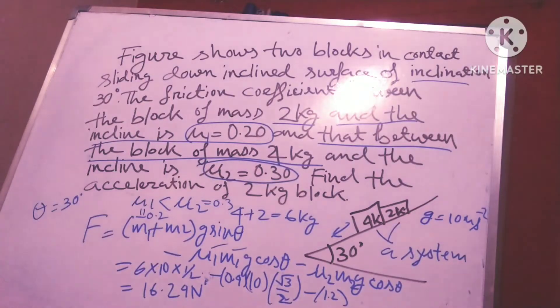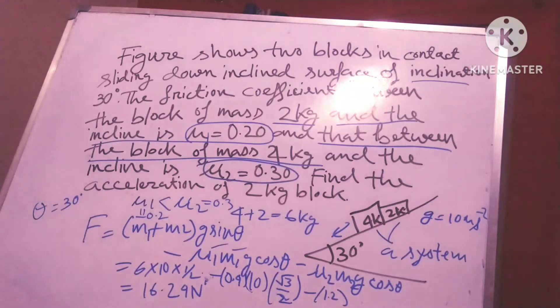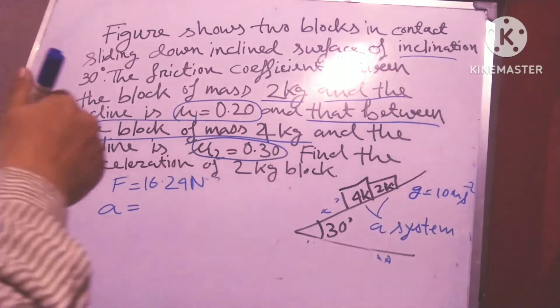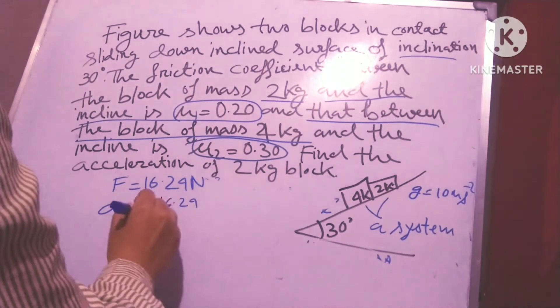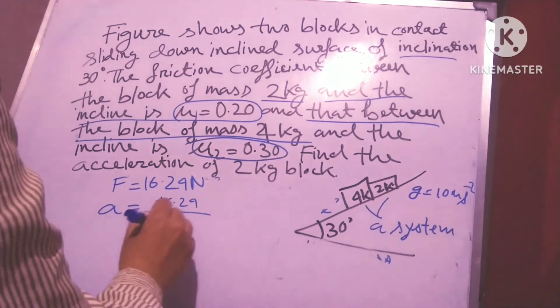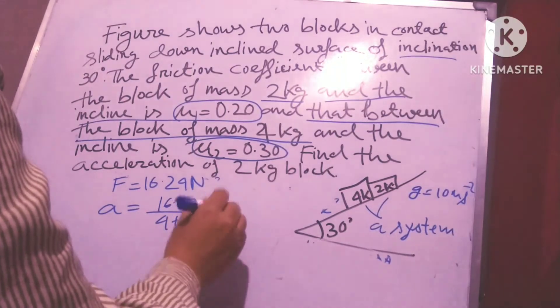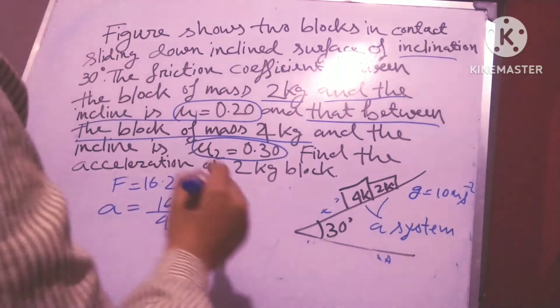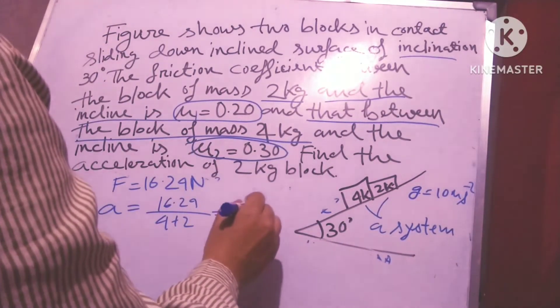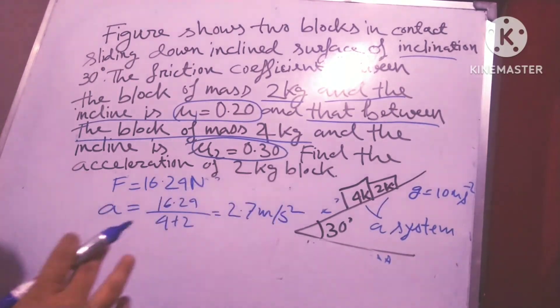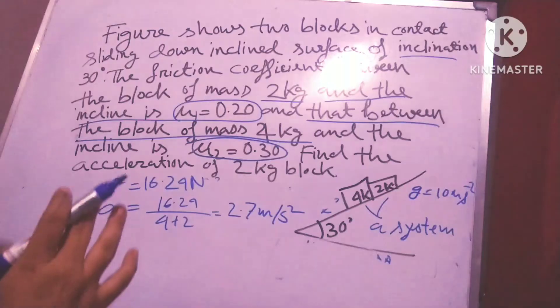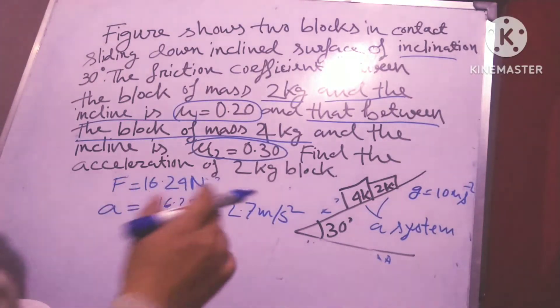Please check - just put the values in the given equation, you will get 16.24 Newtons. So friends, acceleration is 16.24 divided by (4 + 2) equals 2.7 meters per second squared.